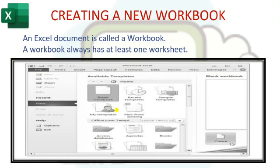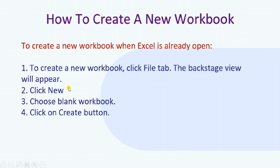How to create a new workbook: you can click on New and then click on Blank Workbook. When you click on Blank Workbook, a new document appears. An Excel document is called a workbook, and a workbook always has at least one worksheet. To create a new workbook, click on the File tab — the backstage view will appear. Then click on New, choose Blank Workbook, and then click the Create button. Your new workbook will appear.